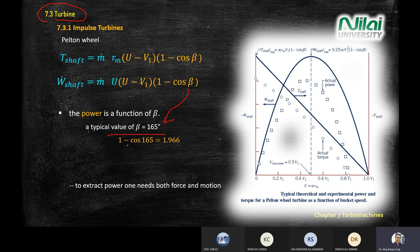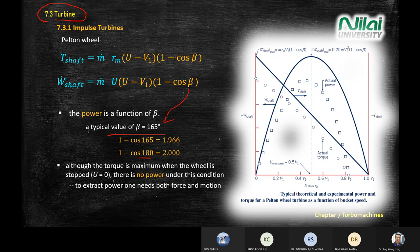If beta reaches 180° — the scenario we do not want — the component (1 − cos beta) becomes 2, which is the maximum. At beta = 180°, the wheel stops spinning and no power is generated. That is why we avoid designing turbines with beta equal to 180°.